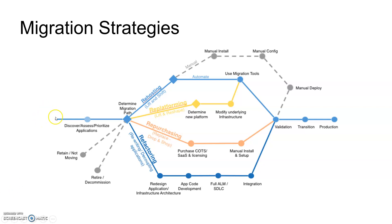The chart defines the major strategies with their steps. The common first step is to discover, assess, and prioritize your applications. Then you select your path — re-hosting, re-platforming, repurchasing, or refactoring. If you select re-hosting, you have two ways: a completely manual process or using an automation migration tool. Every cloud provider has their own migration tools — Azure has Azure Migrate, and AWS has Migration Hub. Then you proceed with validation, transition, and go to production.